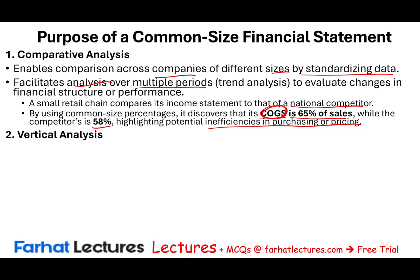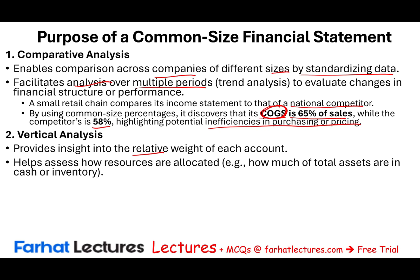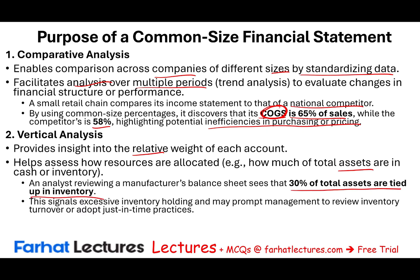Vertical analysis provides insight into the relative weight of each item — going vertically down the statement. It helps us assess how resources are allocated on the balance sheet: how much of total assets are in cash, how much in inventory, and so on. For example, an analyst reviewing a manufacturer's balance sheet sees that 30% of total assets are tied up in inventory, signaling too much inventory if the industry average is 20%.